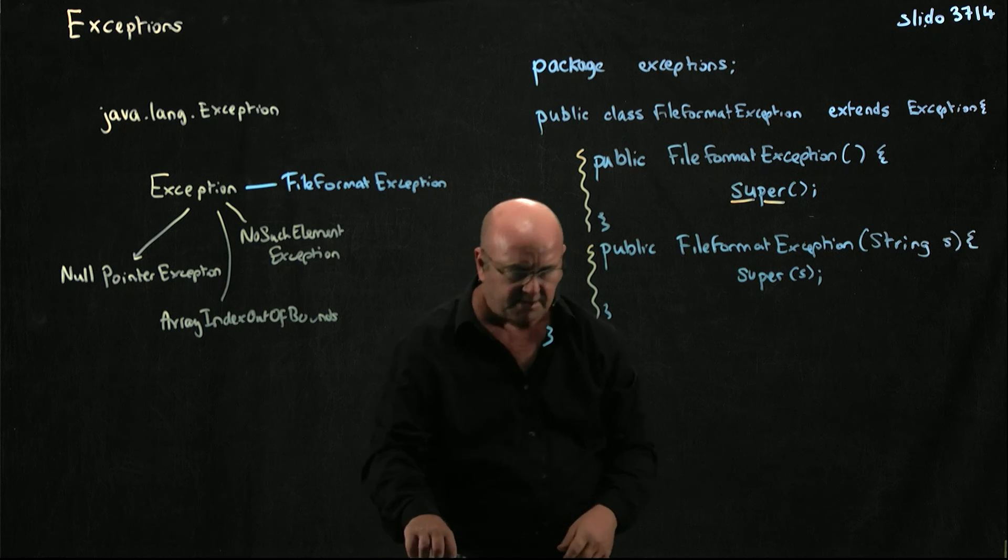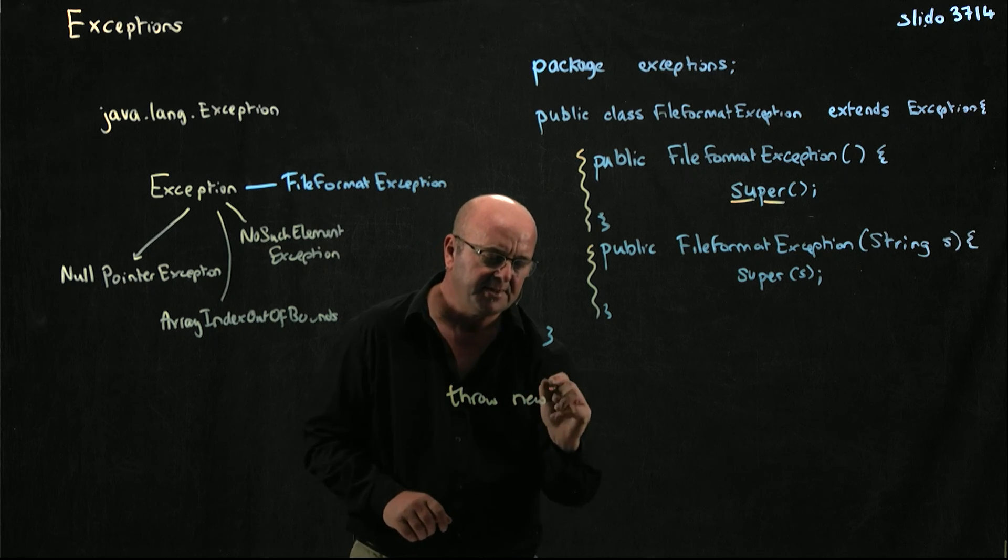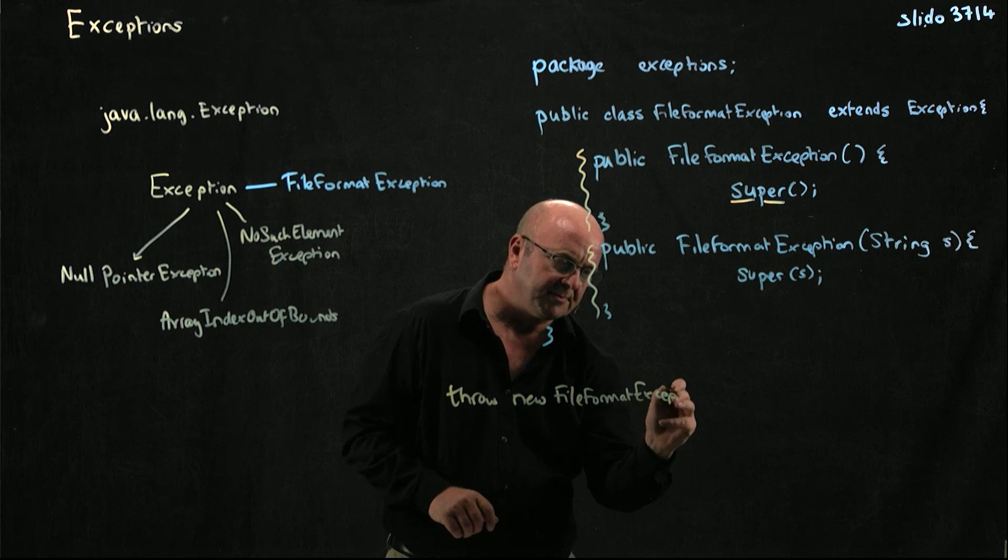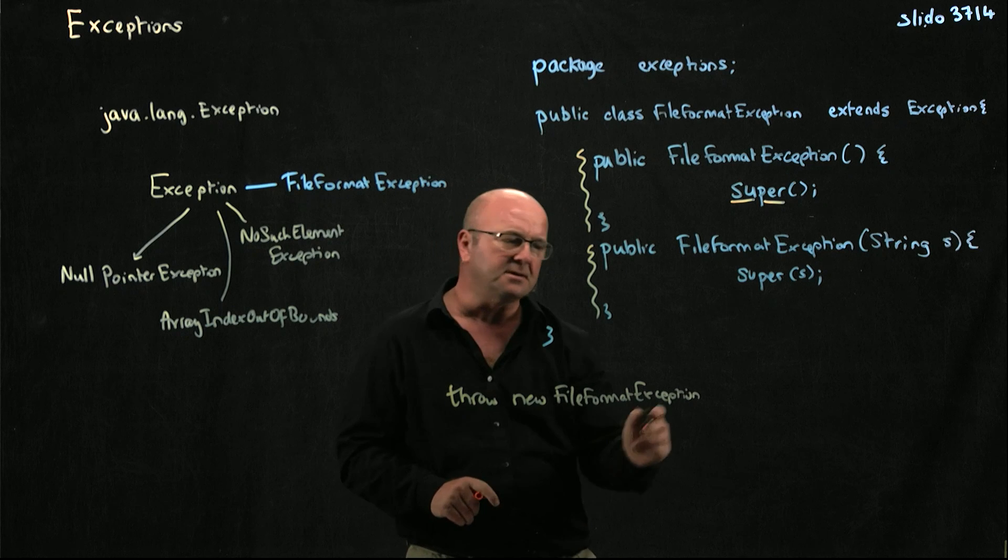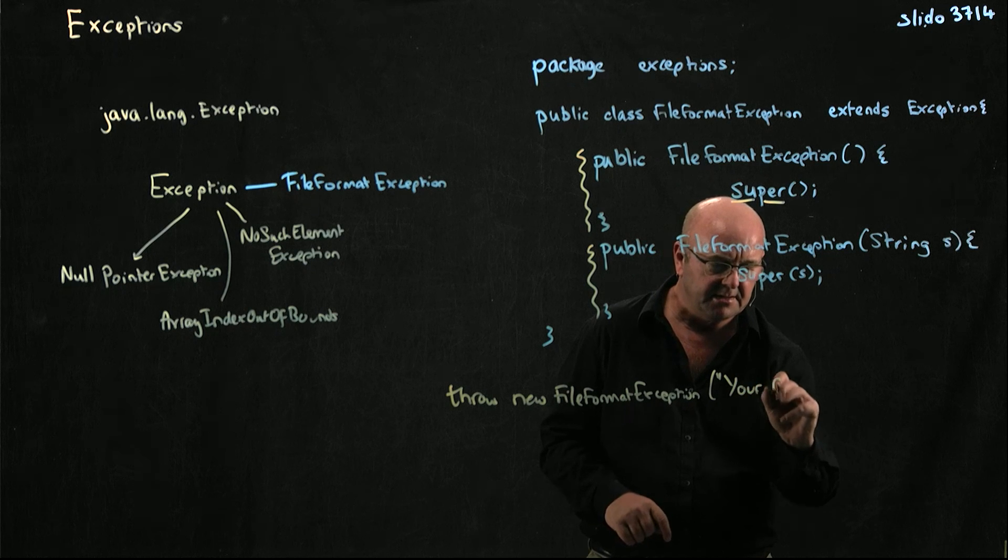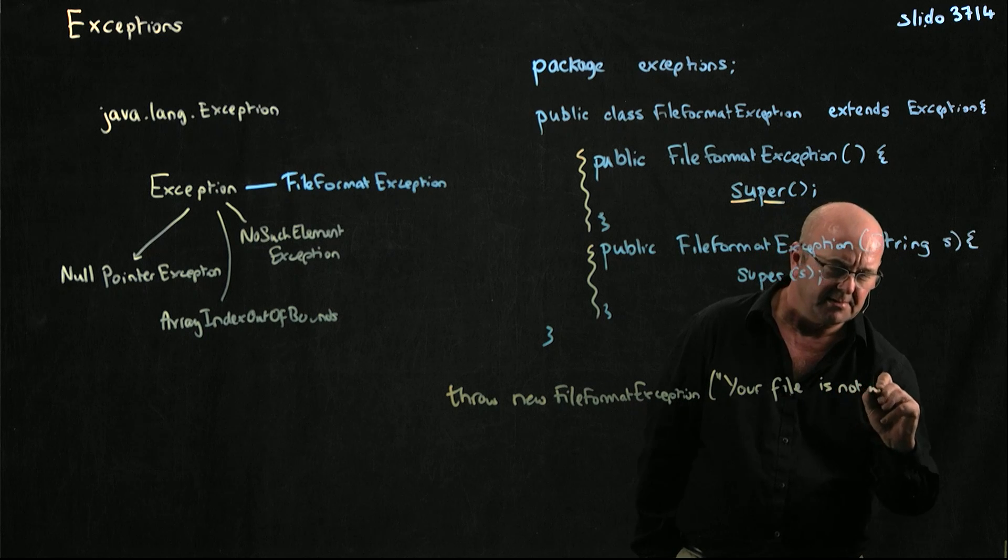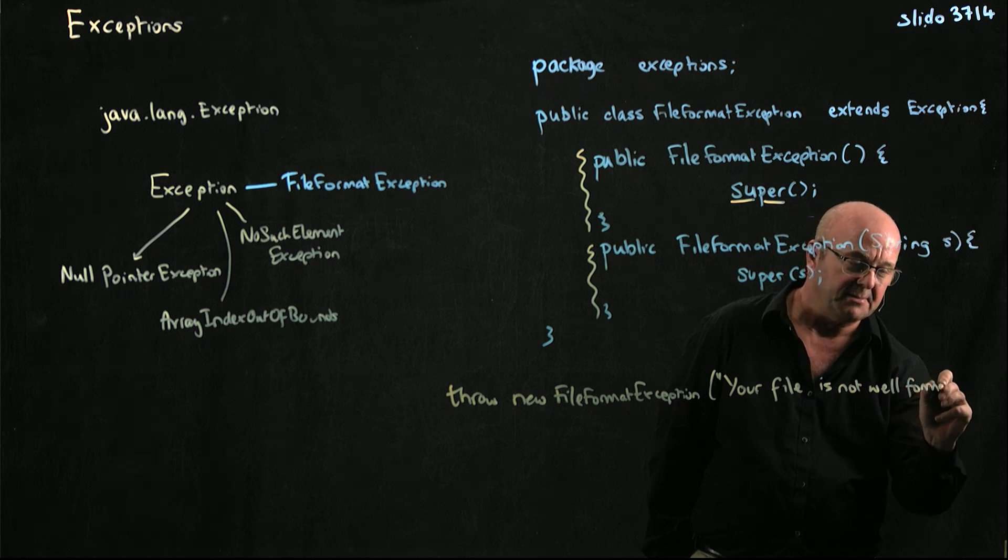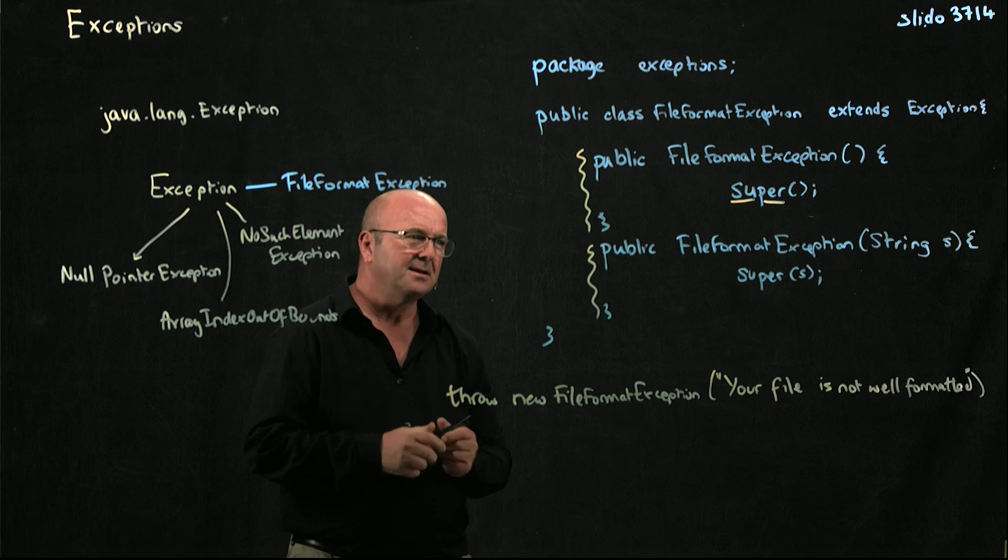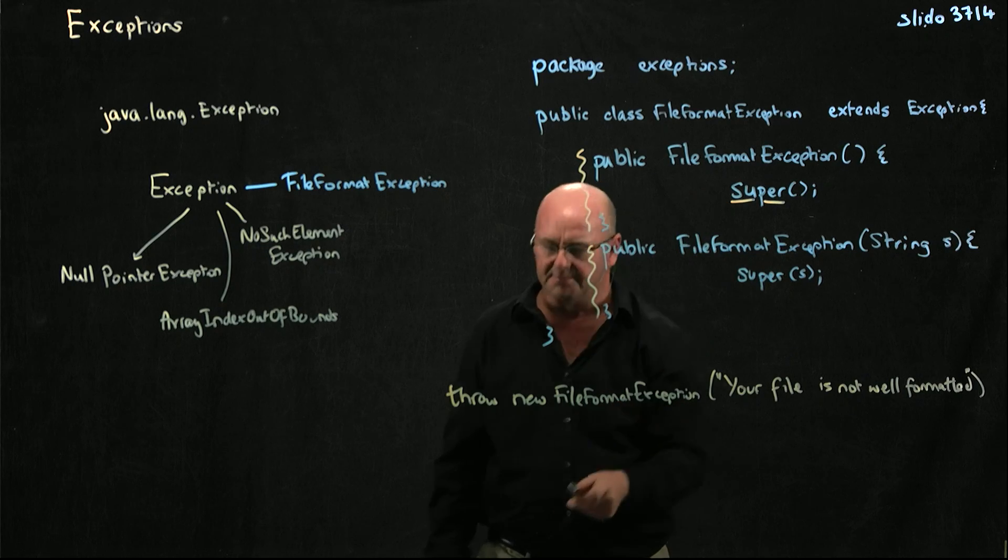And you can call this in your code by saying, throw new file format exception. And you can either just use the default constructor or you can say, the format of your file, your file sucks. Is not well formatted. Might be a better way to phrase that. It depends who you're writing error messages for. So this is the string that gets passed into this method, into this constructor, which then gets passed to super for get message.